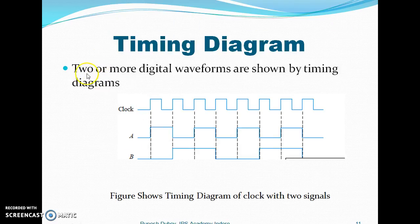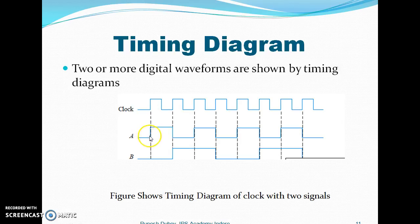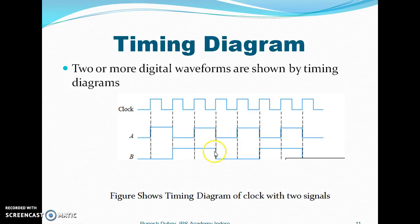These are some of the timing diagrams, where two or more digital waveforms are shown together. For instance, we have a clock signal going at a fixed duration. Signal A spans the entire duration of one clock cycle, covering both the positive and negative portions. Signal B spans two clock cycles.